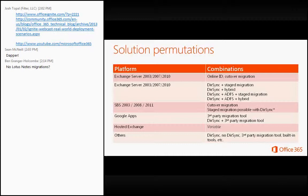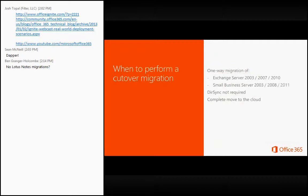Looking at when we would perform a cutover migration: a cutover migration is effectively a one-way migration — we're not going back. It's traditionally used for a one-way migration of Exchange Server 2003, 2007, and 2010, which also rolls up to Small Business Server 2003, 2008, and 2011. In these deployments, we don't use directory sync — we create the users online.